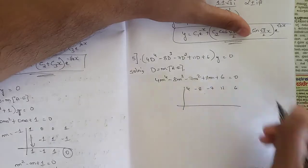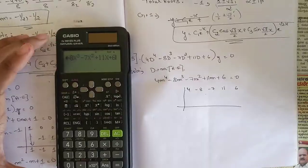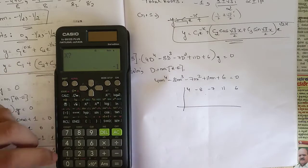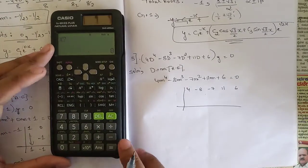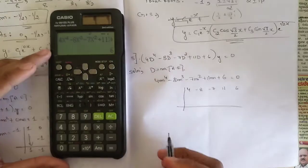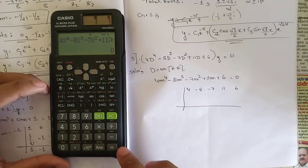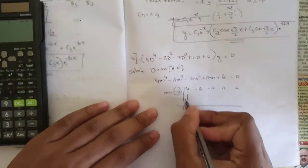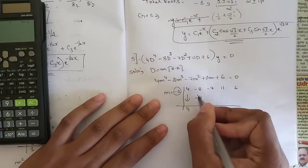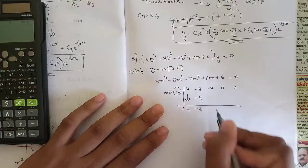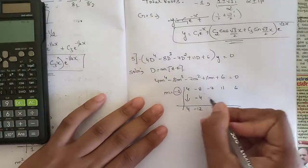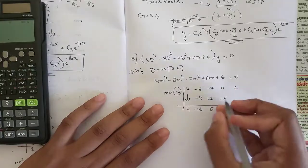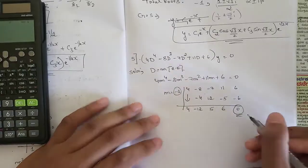Write the coefficients: 4, −8, −7, 11, 6. Put this equation in the calculator. Press calc. Put x = 0: answer is 6. Put x = 1: not zero. Put x = −1: we get 0. So the first root is m = −1.